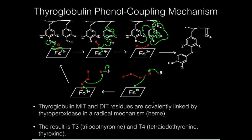For the thyroglobulin phenol coupling mechanism, it starts the same way: the heme iron binds hydrogen peroxide, donates two electrons, kicks off water, and generates the iron-oxo species. This oxo species then takes an electron away from one of the nearby tyrosines — technically a diiodotyrosine — generating a tyrosine radical. The hydroxyl chelated to the iron then takes another electron away from a nearby tyrosine, generating a second radical.